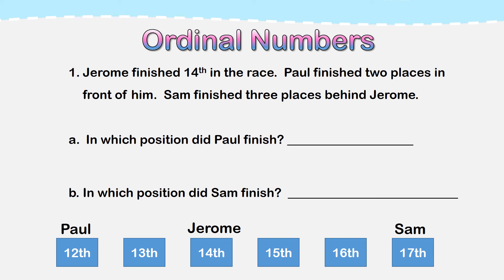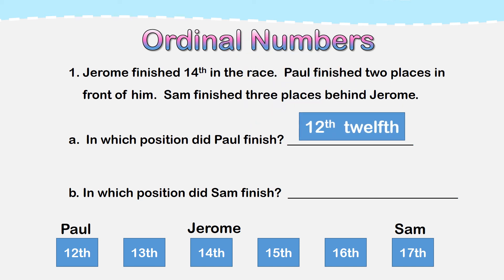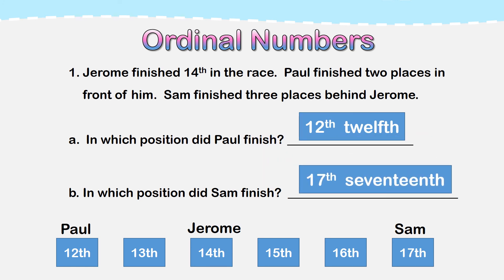Now I have already understood what the problem is asking me to do. I made a plan by drawing a picture of the boxes to represent the places, and I have also solved the problem. So let's write the answer on the line. Paul is in 12th position. Sam is in 17th position. Make sure to check your answers. Good job.